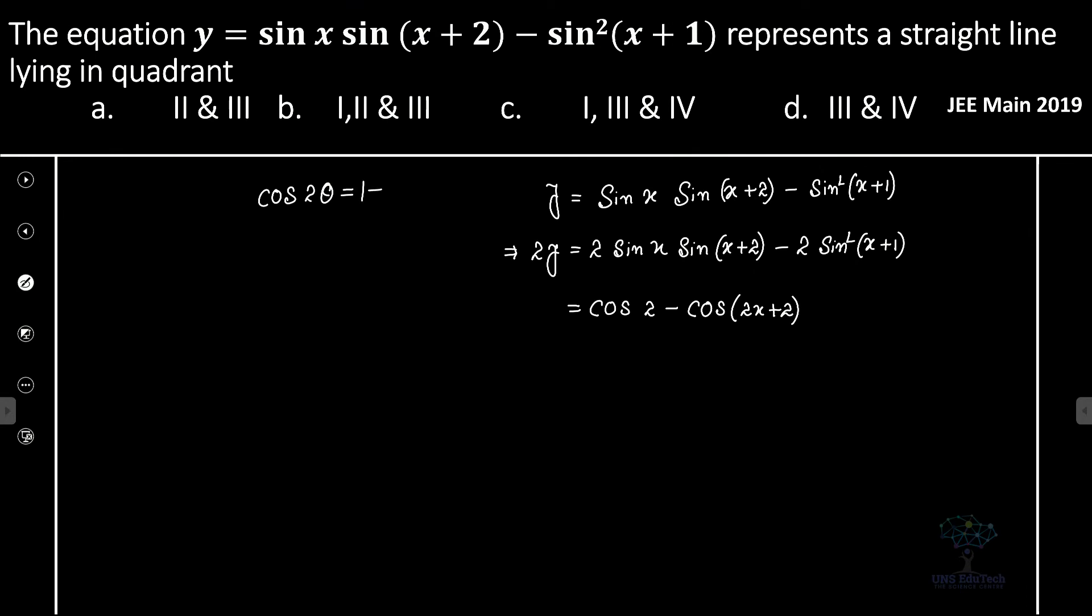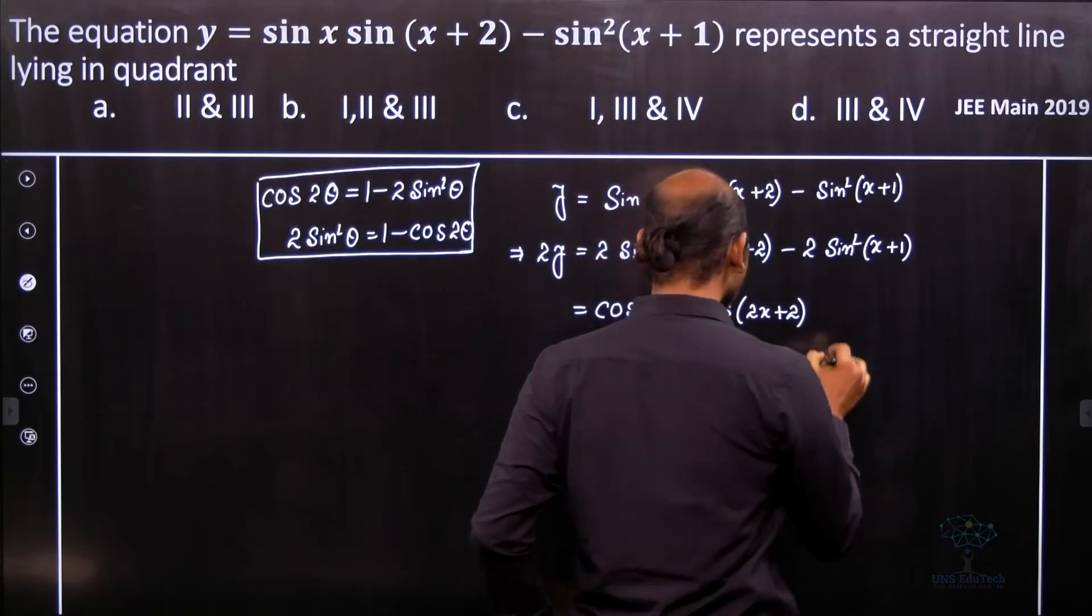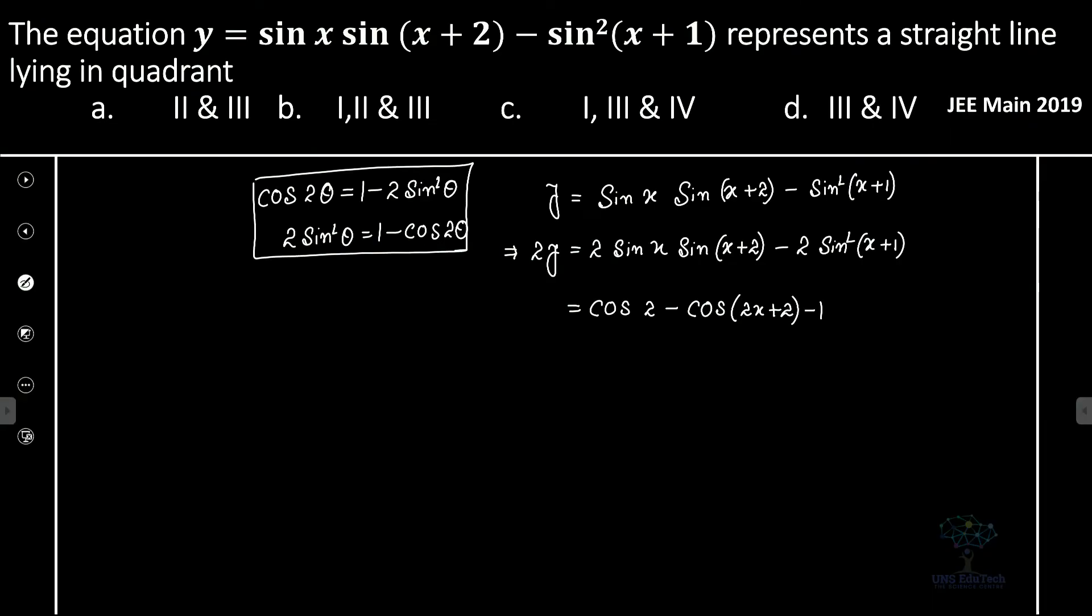We can see that cos 2θ = 1 - 2 sin²θ, therefore 2 sin²θ = 1 - cos 2θ. We'll use this formula to solve this problem.